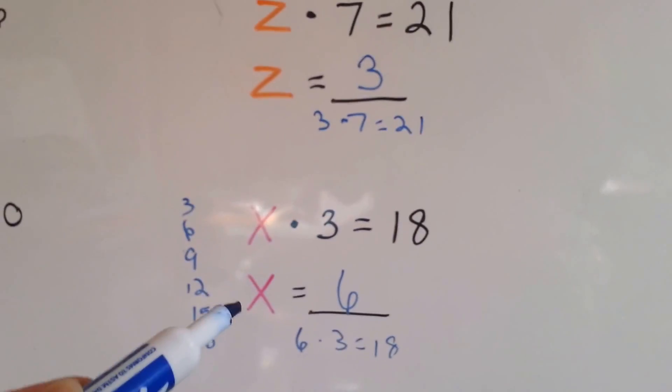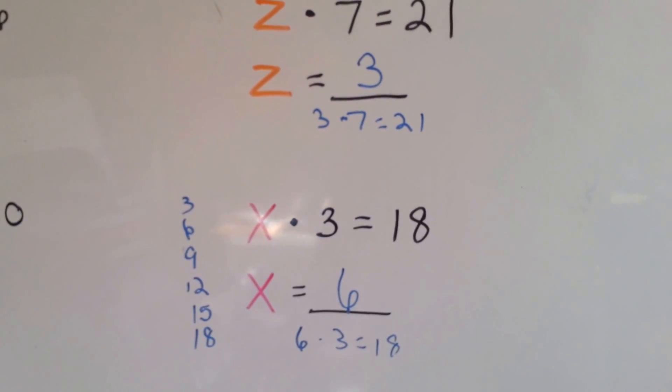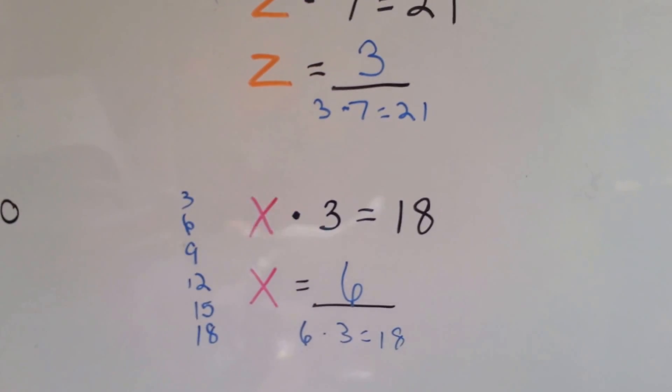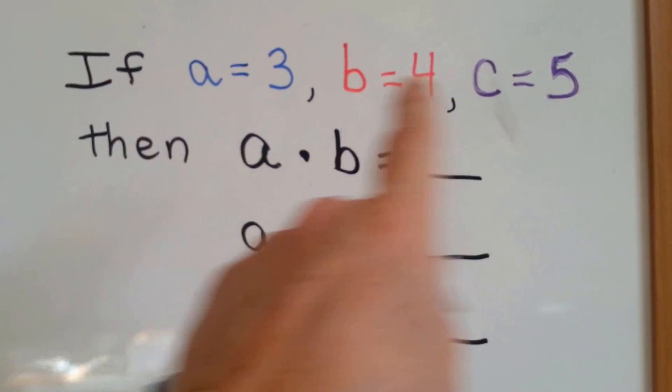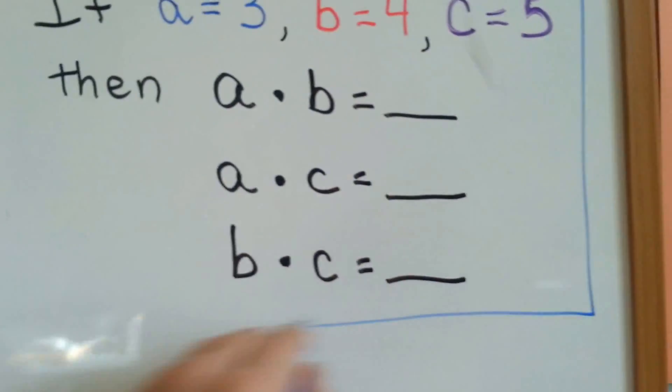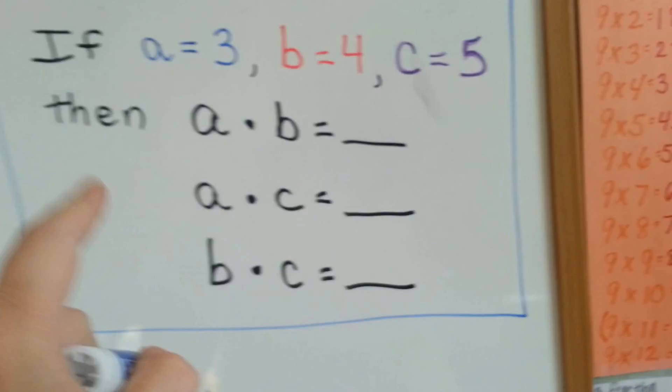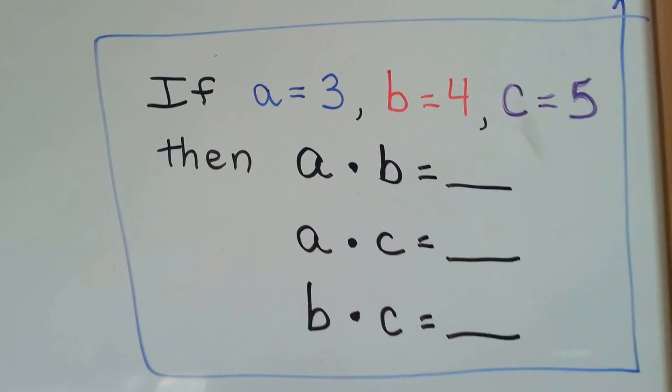And it can vary. Just because x equals 6 here doesn't mean it always equals 6. The next problem it could equal 5 or 100 or anything. Now sometimes in your math book it'll tell you what the variables stand for. But that's just for that one problem. That means for this one problem they stand for this. In the next problem they could stand for something else.